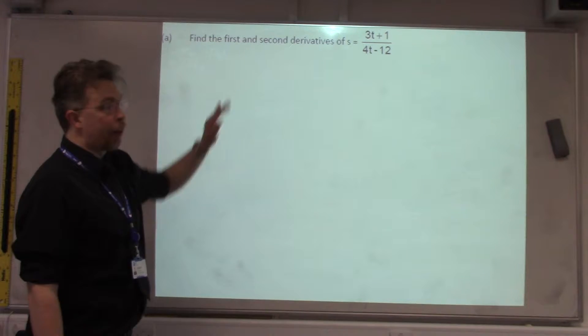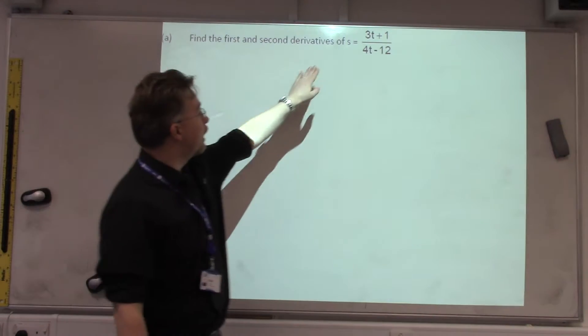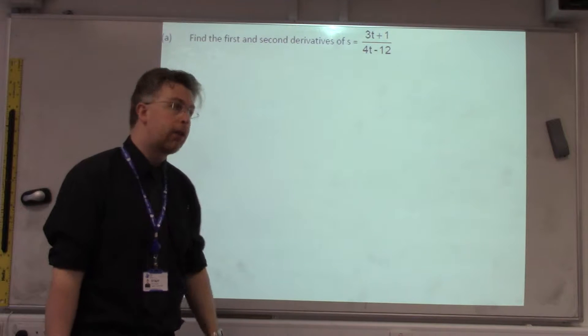Right, again, we've got to find the first and second derivative of part A. This time, we've got a fraction, so S equals 3T plus 1 over 4T minus 12.